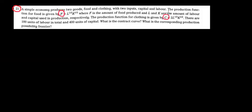Let's start working on question 21. We have an economy that produces two goods — food and clothing — with two inputs: capital and labor. We have the production function for food and for clothing. There are 100 units of labor in the economy and 400 units of capital. We need to find the contract curve and the production possibilities frontier.